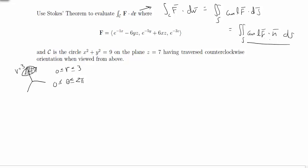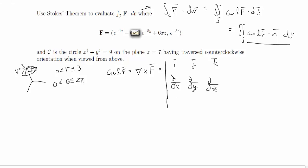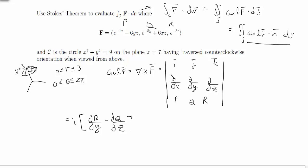One of the first things we can do is find each individual part — specifically, the curl of the vector field. That equation is del crossed with the vector field, giving us a matrix with i, j, k in the first row, then partial/∂x, partial/∂y, partial/∂z in the second row. To simplify, we label the vector field components as p, q, and r. That gives us: i times (∂r/∂y − ∂q/∂z), minus j times (∂r/∂x − ∂p/∂z), plus k times (∂q/∂x − ∂p/∂y).